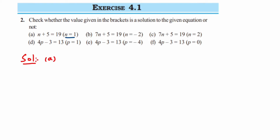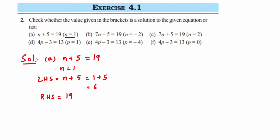The first equation is n plus 5 is equal to 19, and we have to take n=1. LHS is equal to n plus 5, which is 1 plus 5, equal to 6. The RHS is 19. Clearly, LHS is not equal to RHS, so therefore n=1 is not a solution.